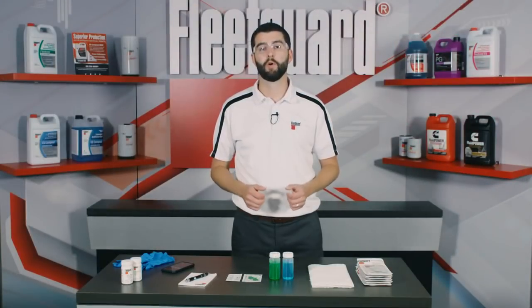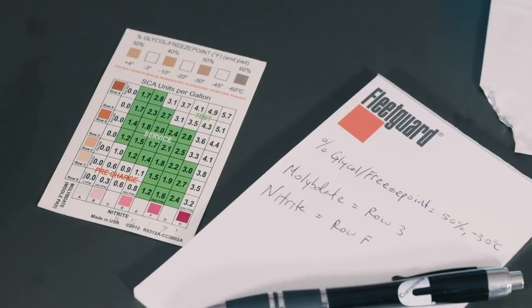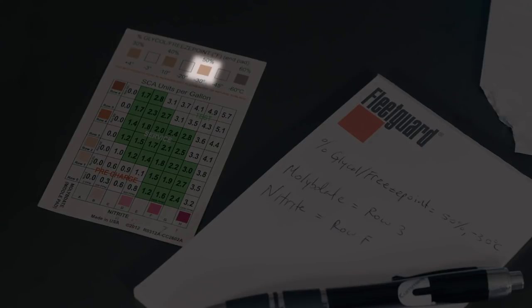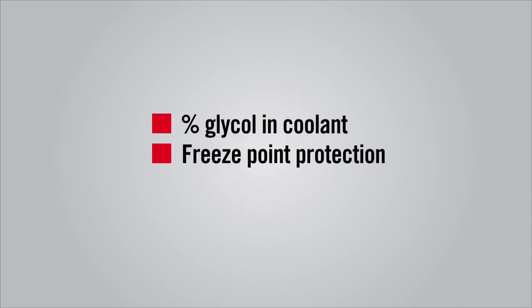The percent glycol chart is the most self-explanatory scale on the card and as you've probably guessed this scale provides an estimation of the percent glycol in the coolant as well as the associated freeze point protection provided by the coolant.